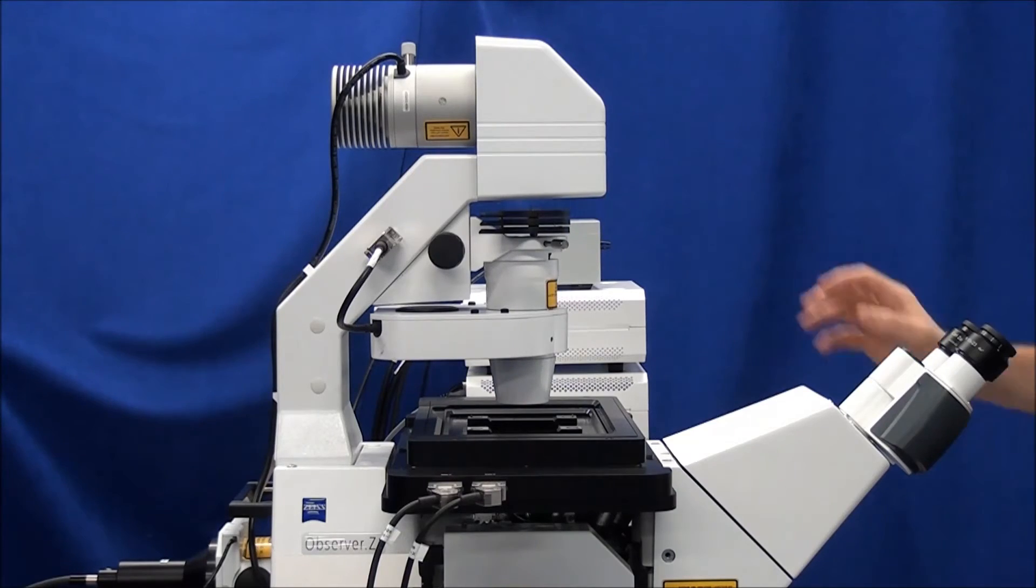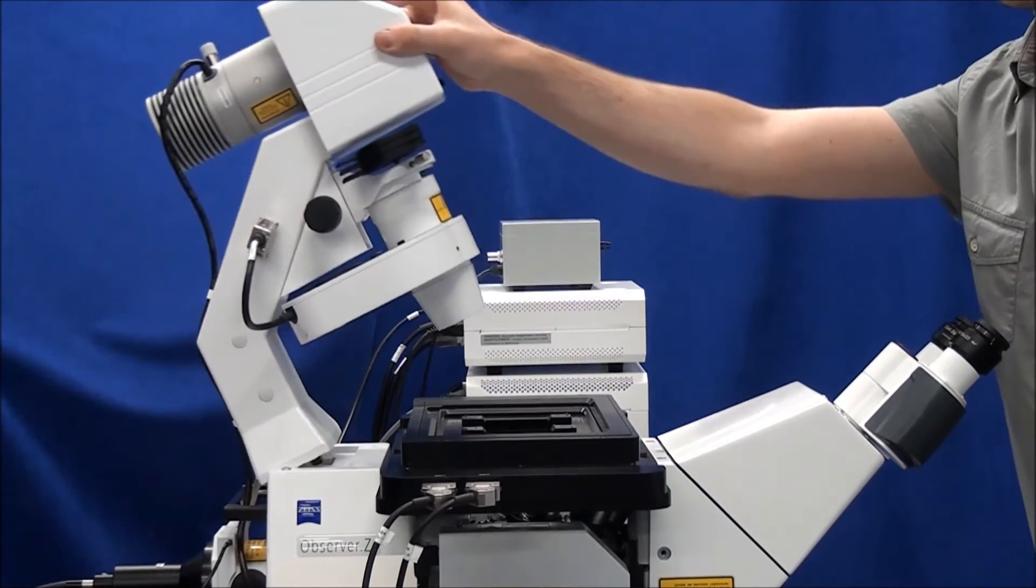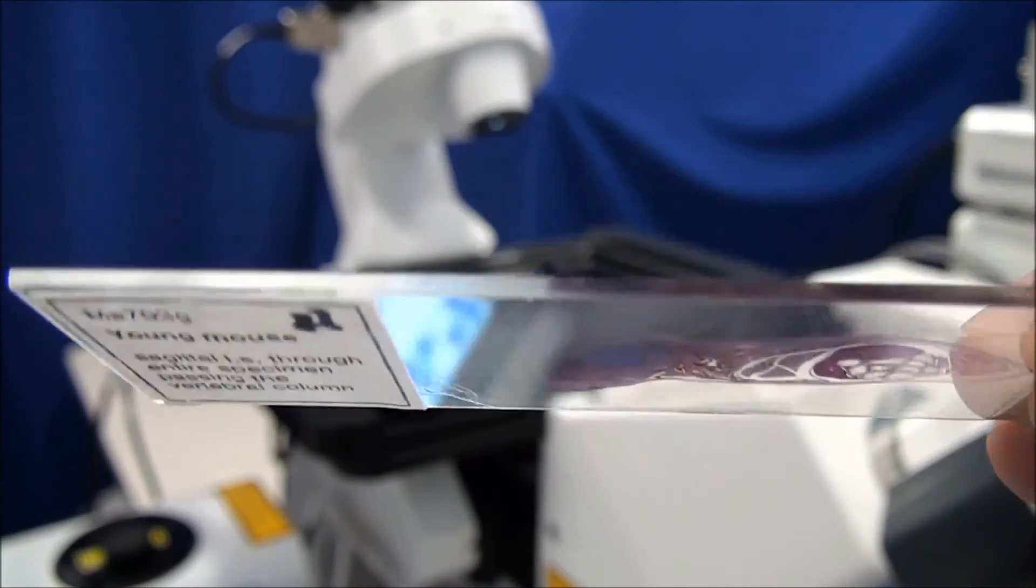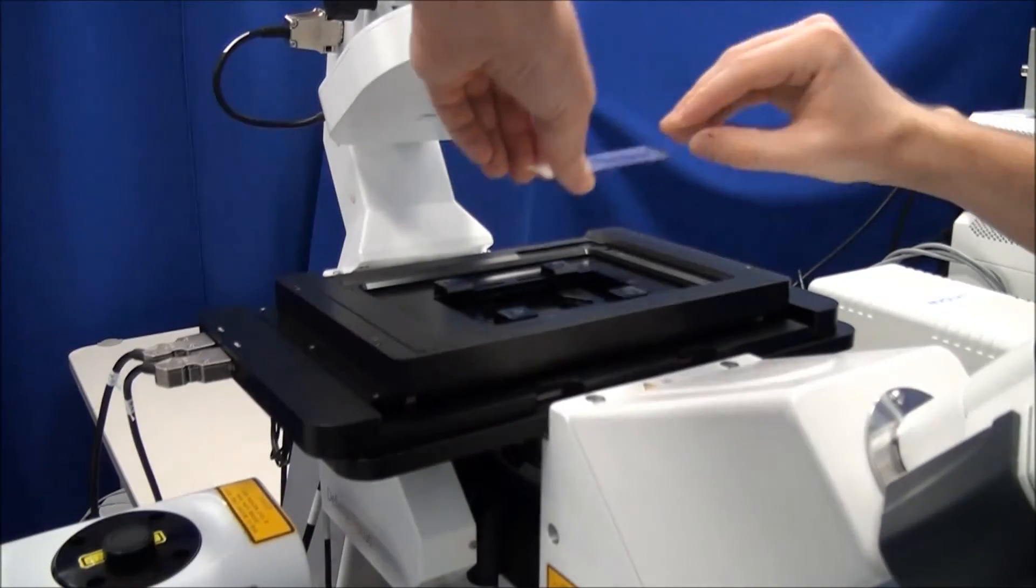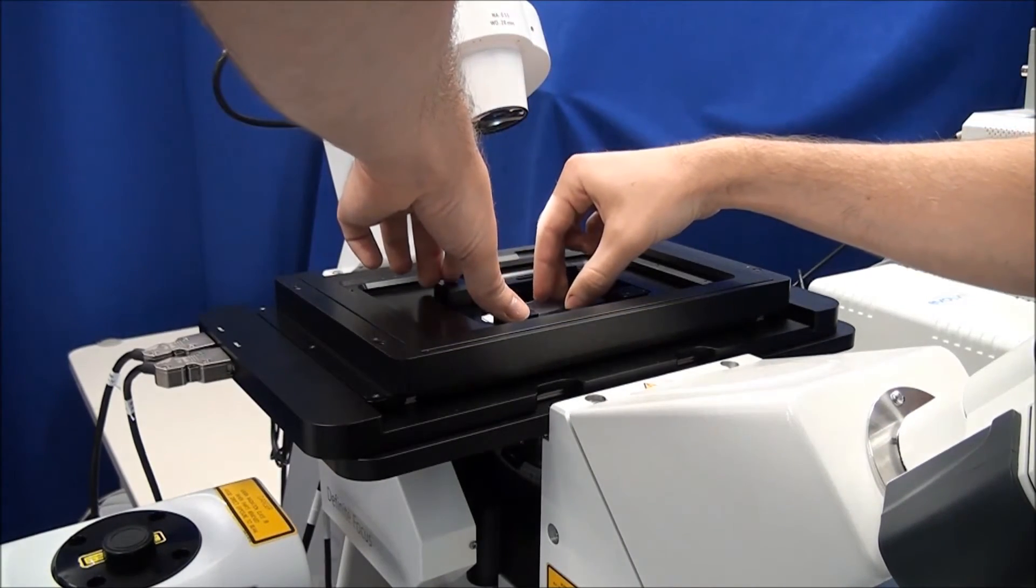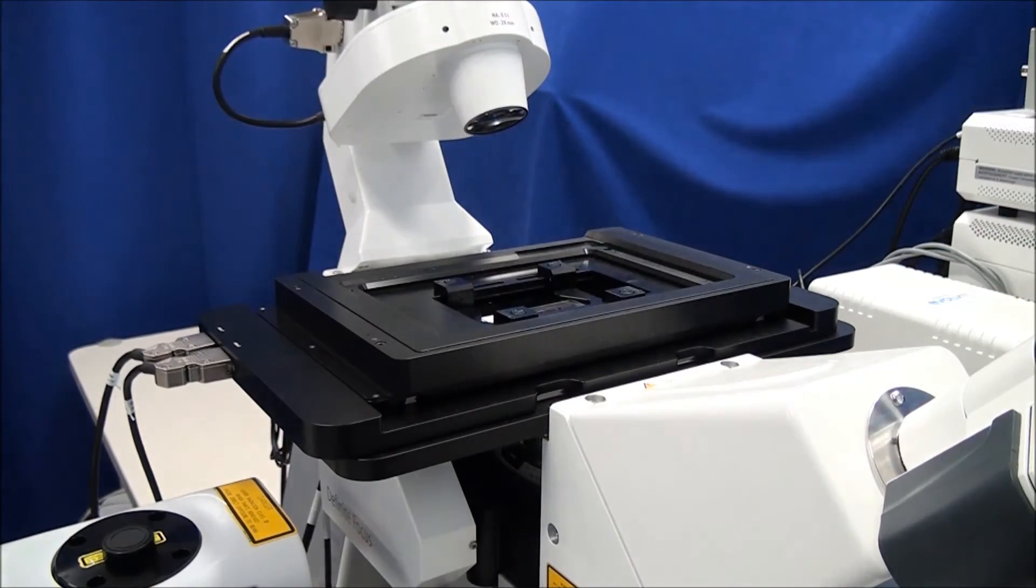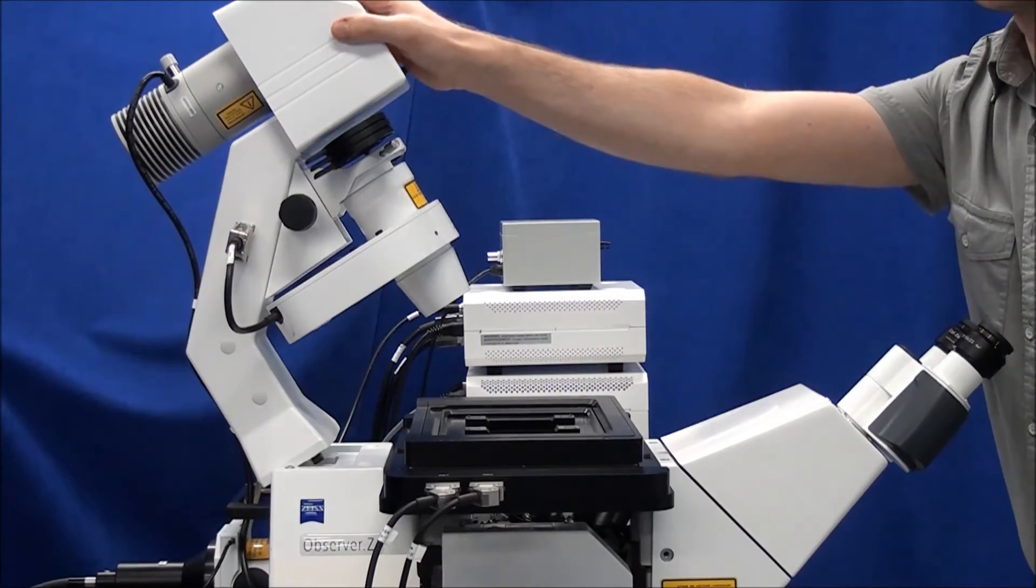Tilt the transmitted light arm backwards to the stop. Place your high contrast stained specimen slide face down on the stage. The cover slip should face towards the objective. Tilt the transmitted light arm back down into place.